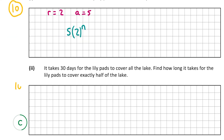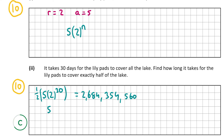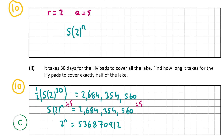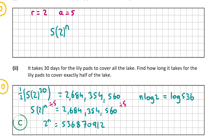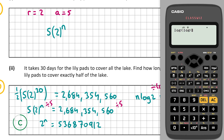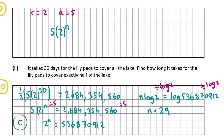Part c2 is also worth 10 marks. It takes 30 days for the lily pads to cover the whole lake, so the full area is 5 × 2^30. Half of that is 2,684,354,560. Setting 5 × 2^n equal to that and dividing both sides by 5 gives 2^n = 536,870,912. Taking logs: n × log(2) = log(536,870,912), so n = log(536,870,912) ÷ log(2) = 29. The lily pads cover half the lake in 29 days — logically consistent since if they double daily and are full on day 30, they were half full on day 29.